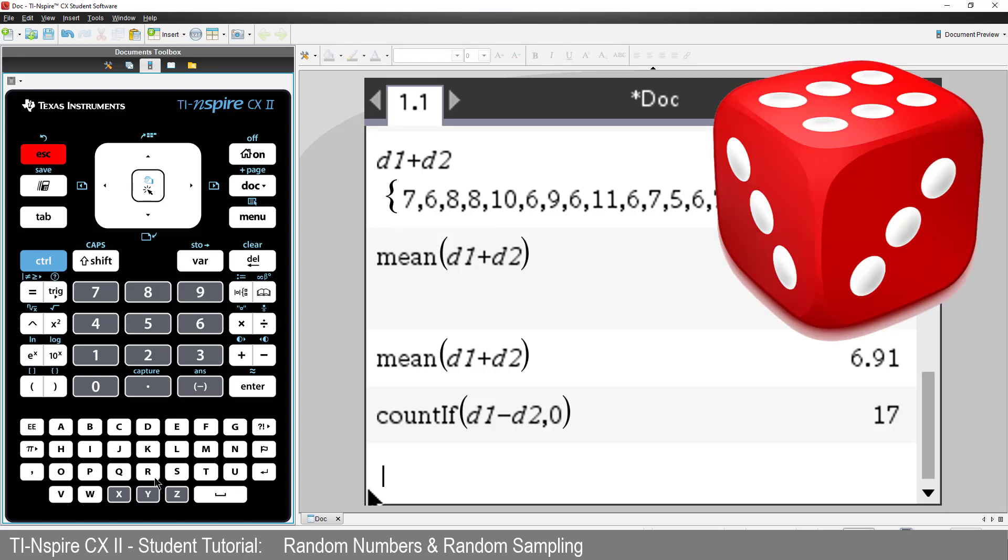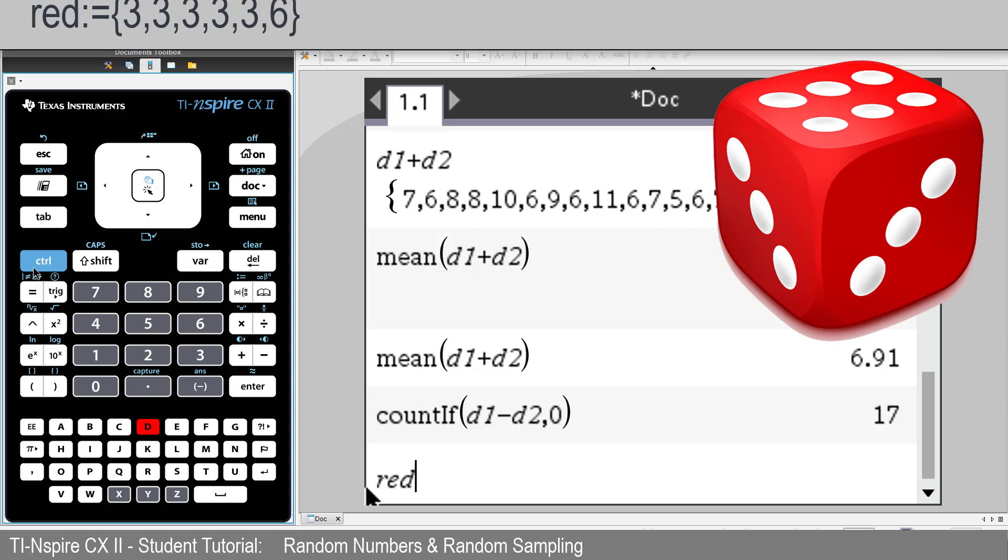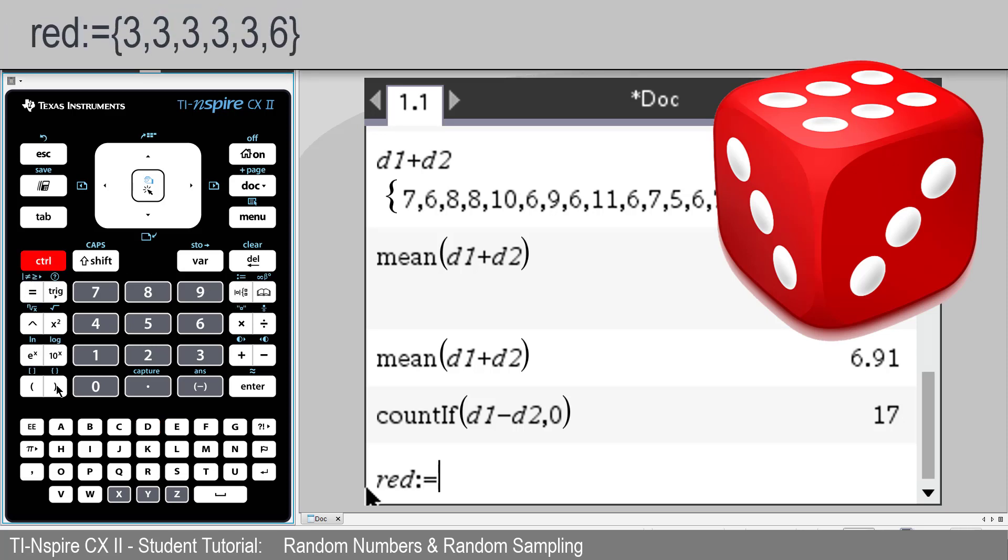First up, we have a red dice. It has the numbers 3, 3, 3, 3, 3, and 6. I'll store that as a list and call it red.